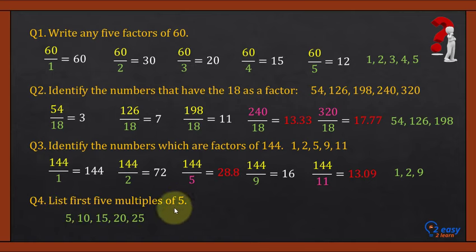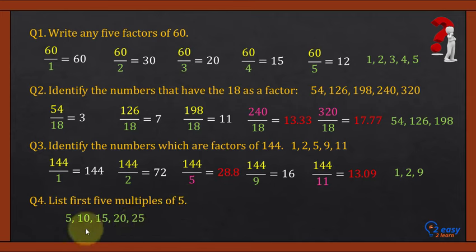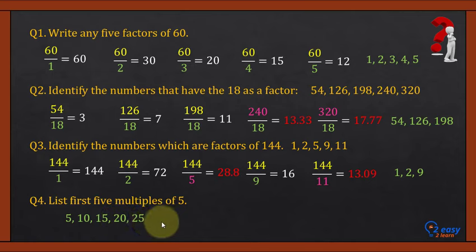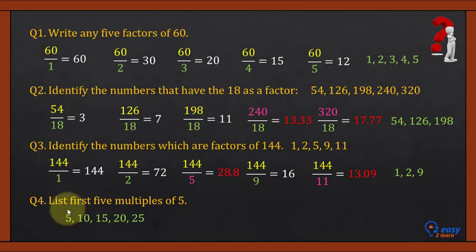Question 4: List 5 multiples of 5. We read the 5 times table: 5 × 1 = 5, 5 × 2 = 10, 5 × 3 = 15, 5 × 4 = 20, 5 × 5 = 25, and so on. We can write infinite multiples of 5, but the restriction here is to write only 5 multiples of 5.